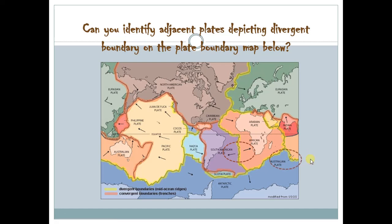Another example would be the Australian plate and the Antarctic plate, moving away from each other as well. Another example would be the Eurasian plate and the North American plate. As you can see, this yellow line is creating the mid-Atlantic Oceanic Ridge. If you could also notice, Iceland — that whole country — is actually a place where it's being ripped by this mid-Atlantic Oceanic Ridge. We can see a lot of evidence showing that these two plates are actually moving away from each other, thus creating a divergent plate boundary.